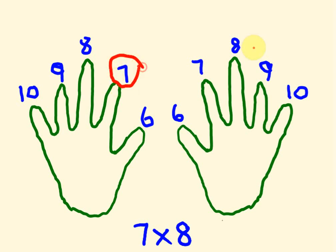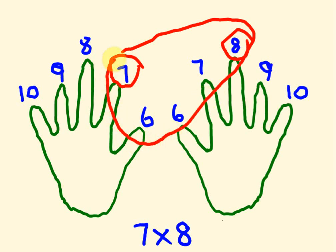Here's the seven. Here's the eight. Put those two fingers together. The ones that are closest towards you, including that particular one, are going to encompass all of these fingers. We have one, two, three, four, five.